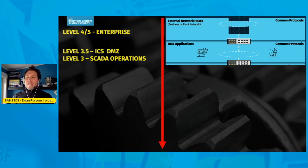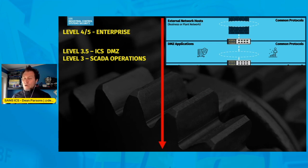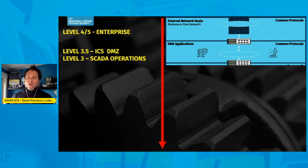At level three is your SCADA operations — possibly still historians at this level as well, but ICS site-wide and regional SCADA. You may also find an OT-specific Active Directory here, which is always a great idea. Also your OT patch services, possibly for your Windows OT devices using WSUS, and things like Satellite or similar tools for patching Linux boxes — covering both Windows and Linux OT assets.